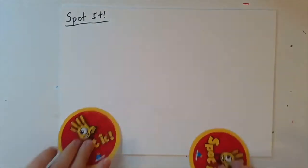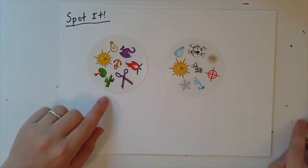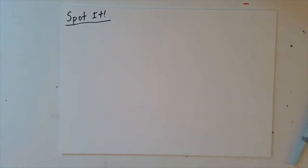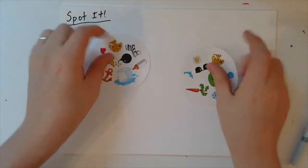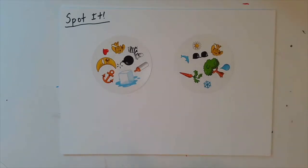So if we play again, flip these up, hopefully I'll do better this time. You can notice the sun is on both of these cards. And flip this up. You will notice that the dog is on both of these cards.